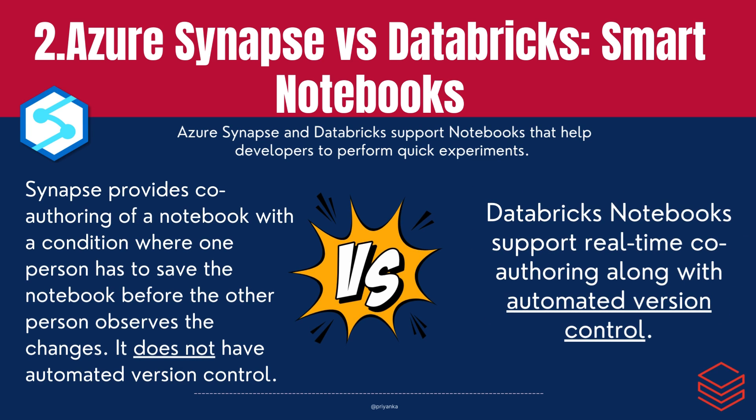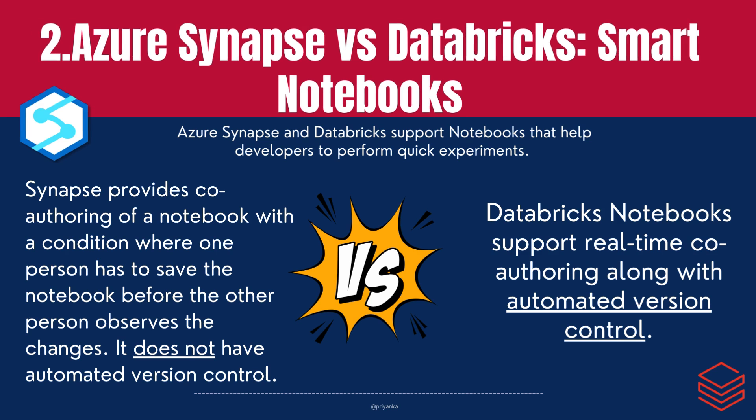The second difference is in smart notebooks. Azure Synapse and Databricks support notebooks that help developers perform quick experiments. Synapse provides co-authoring of a notebook with a condition where one person has to save the notebook before the other person observes the changes, and it does not have automated version control. However, Databricks notebooks support real-time co-authoring along with automated version control.